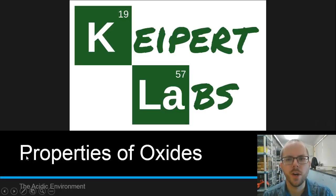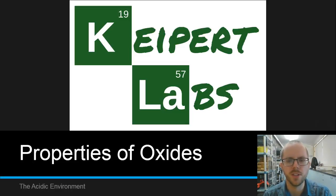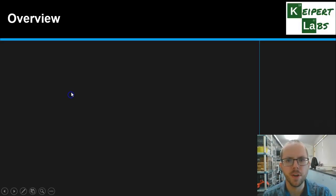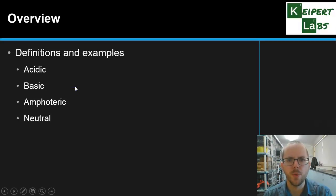Hi everyone and welcome to Kuypert Labs. Today we're going to be talking about the properties of oxides in the periodic table. Let's begin with an overview. We're going to be talking about definitions and examples of the four main types of oxides that we consider.